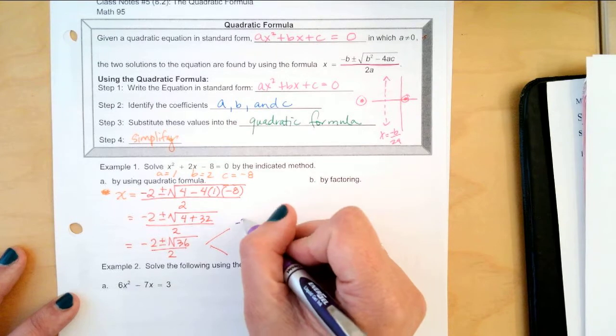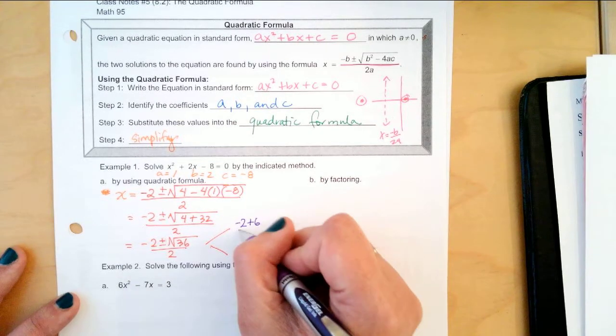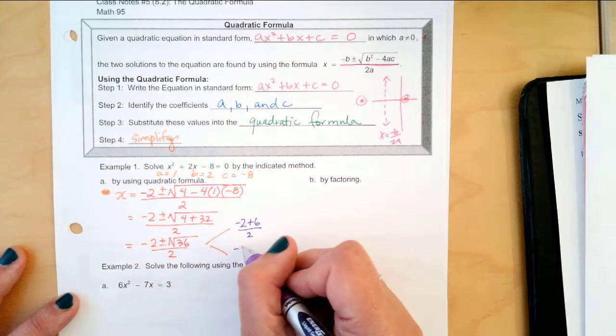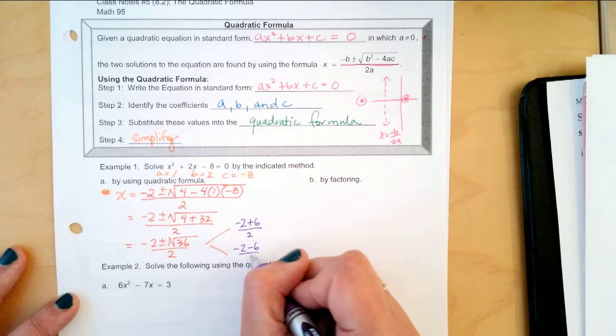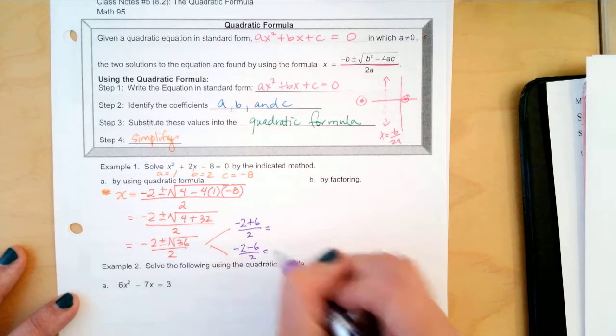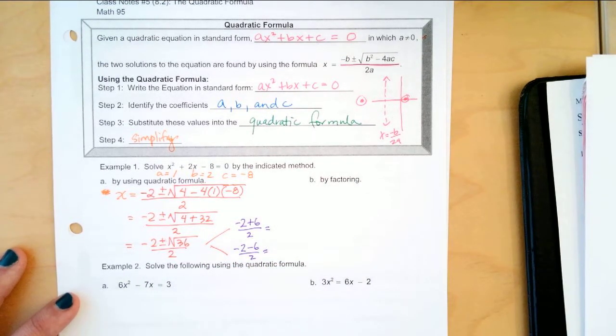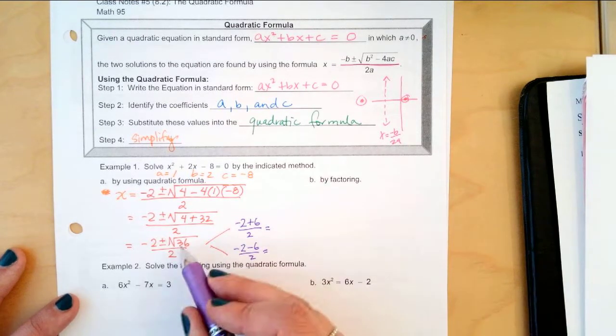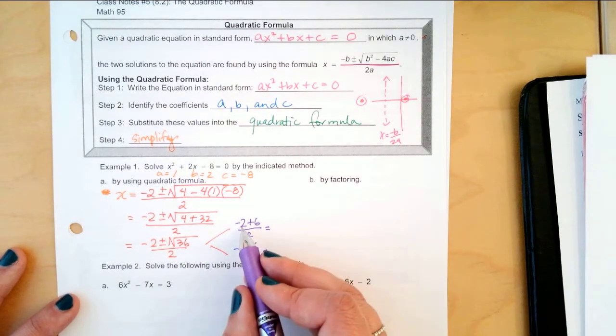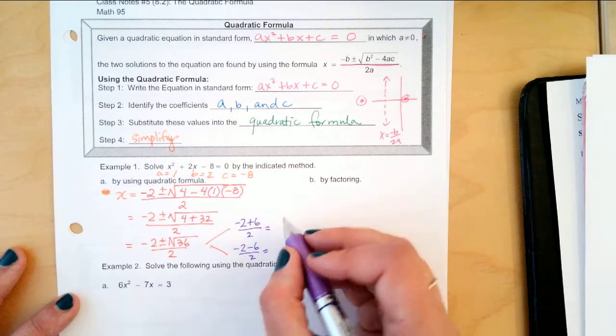So, we have negative 2 plus 6 over 2 and negative 2 minus 6 over 2. We can simplify both of those. Because 36 was a perfect square, we don't have to simplify the radical because we're taking the square root of it. So, what's negative 2 plus 6 divided by 2?